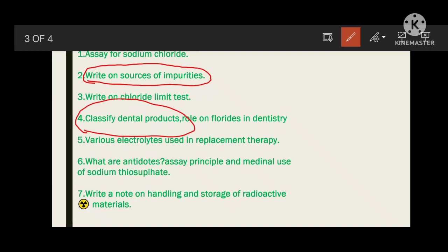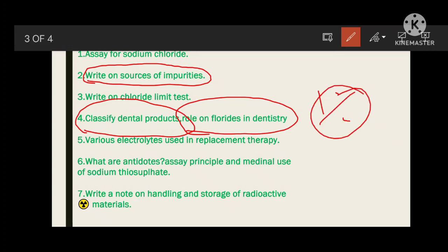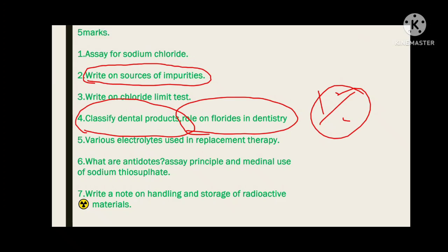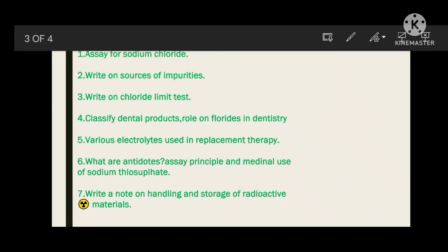For dental products, classify items like toothpaste, brushes, and floss — write one or two lines about each. The main important thing is the role of fluoride in dentistry. Most toothpastes contain fluoride as a chemical. Fluoride should be at one part per person in drinking water — if it exceeds or decreases, it leads to many diseases. Write down fluoride's role in dentistry. Next: various electrolytes used in replacement therapy. If the body needs electrolytes, they are supplied through DNS or NS, which contain sodium chloride and dextrose.